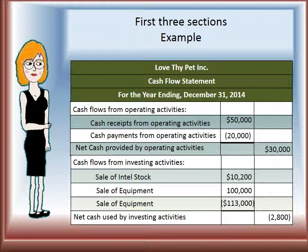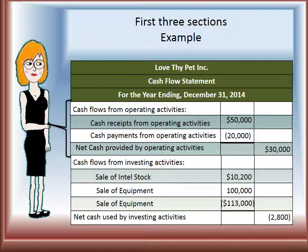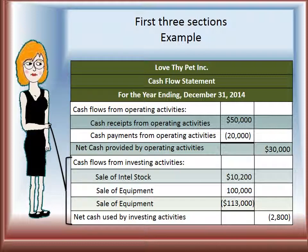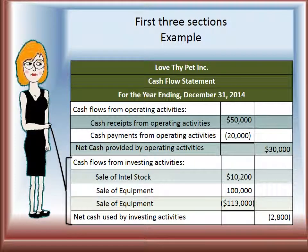Now we have the first three sections: the header, the operating section, and the investing section of the cash flow statement.